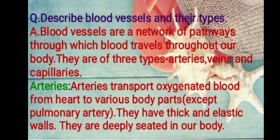Next question: describe blood vessels and their types. Blood vessels are a network of pathways through which blood travels throughout the body. There are three types: arteries, veins, and capillaries. Arteries transport oxygenated blood from the heart to various body parts, except the pulmonary artery, which takes deoxygenated blood from the right ventricle to the lungs. Arteries have thick and elastic walls and are deeply seated in the body.